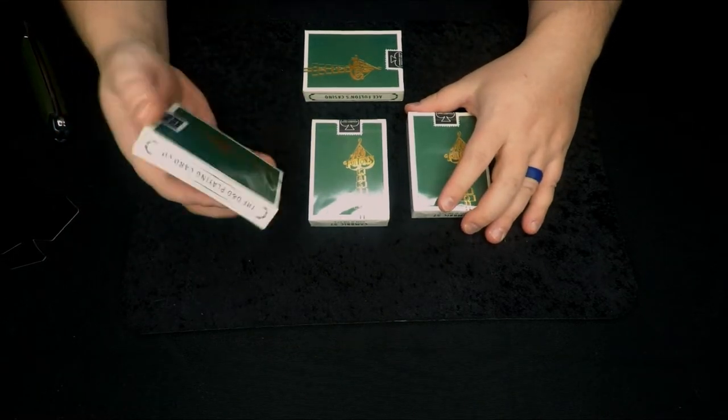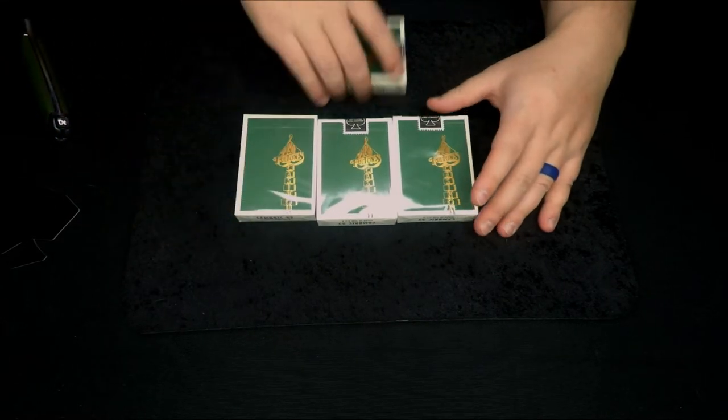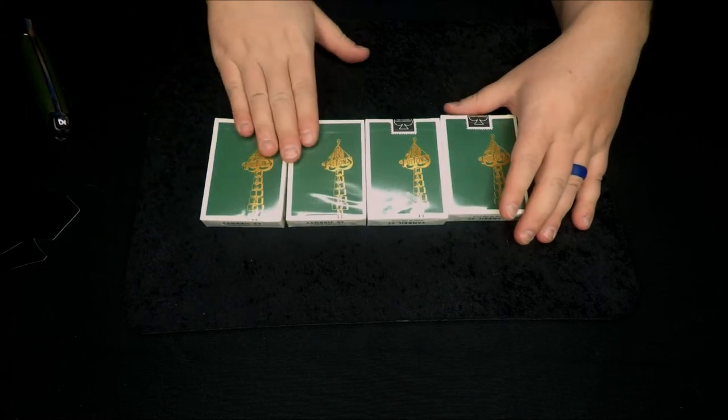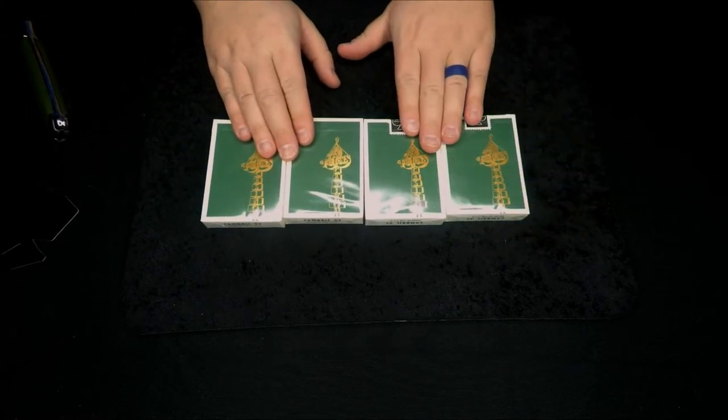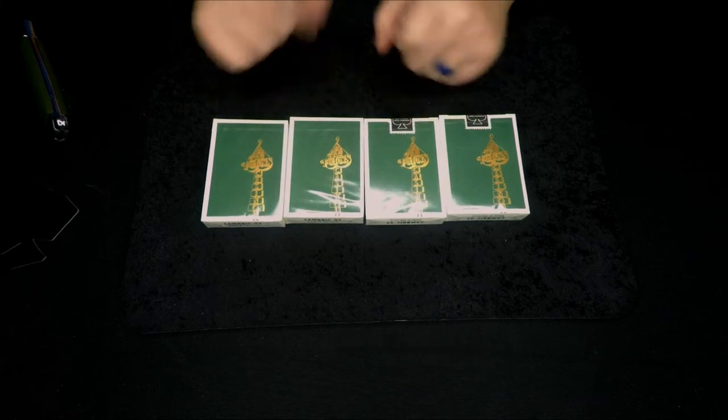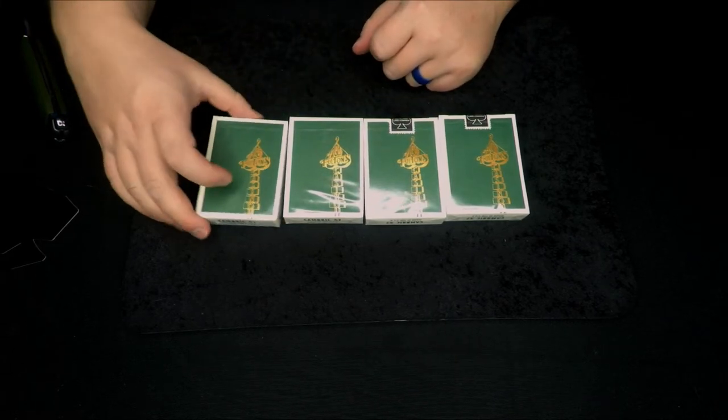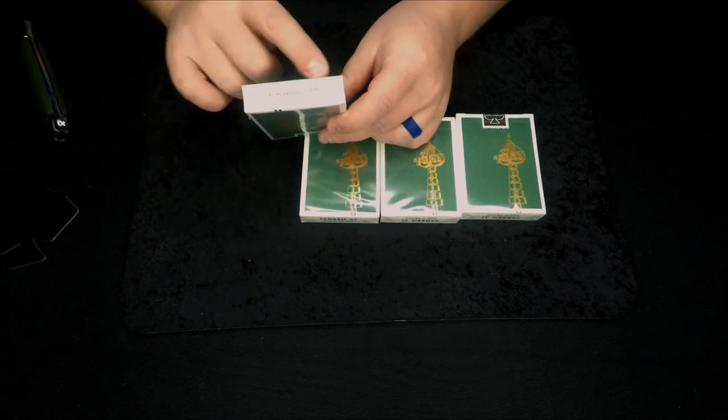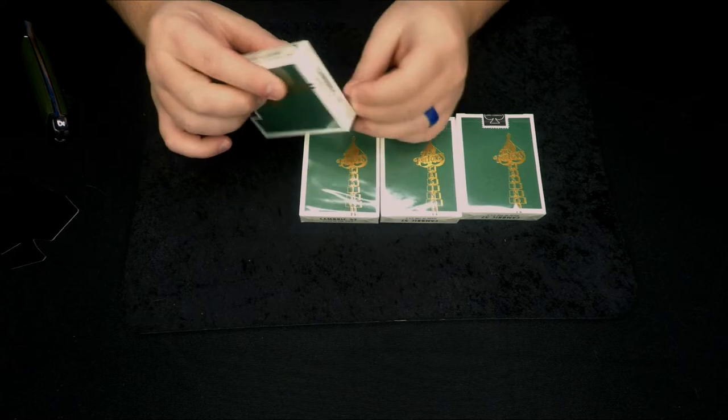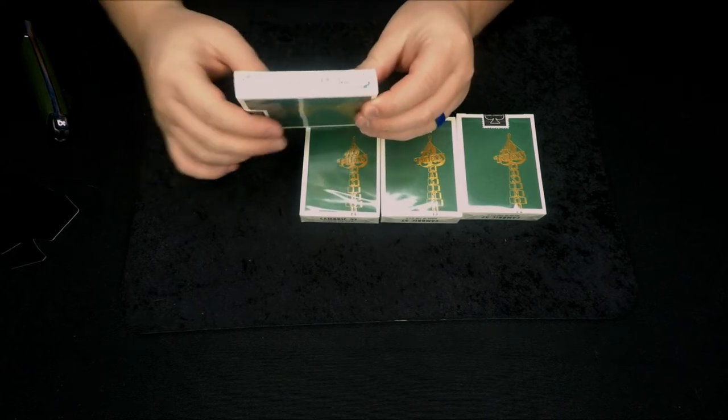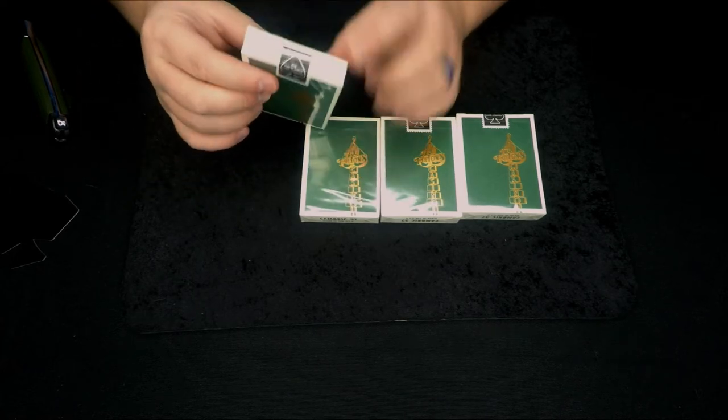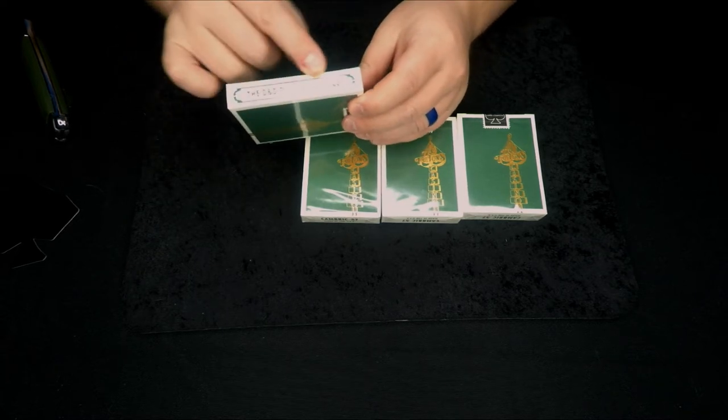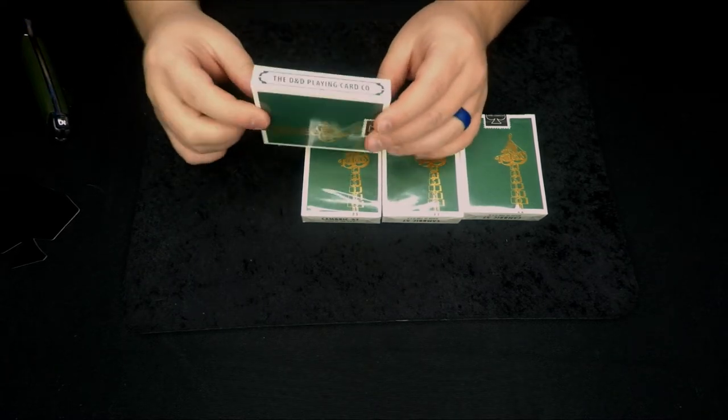So here's what we got. We've got four decks. And as you can see, this is the front. This is what the front of the tuck case looks like. This is what the back of the tuck case looks like. So the front and the backs match identically. We'll go ahead and we'll take a look. Cambric 37, made in the USA on the bottom. Ace Fulton Casino up top. Emblem there, covered by the seal. And then the D&D Playing Card Company.